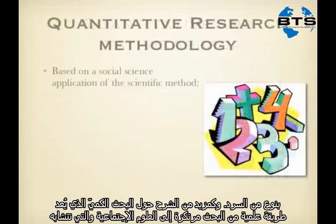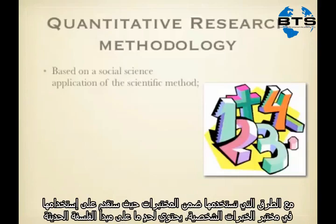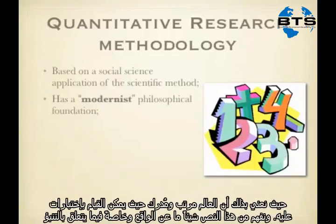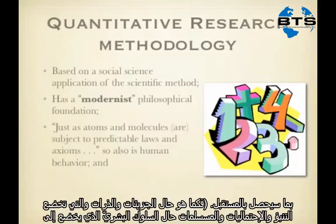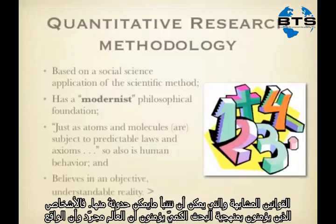Quantitative research methodology applies the scientific method to the social sciences — the same methods used in a lab are used in the lab of personal experience. It has a modernistic philosophical foundation, meaning the world is orderly and understandable and we can perform tests on it. From those tests, we can understand reality — especially in terms of predicting what can happen in the future. Just as atoms and molecules are subject to predictable laws, so is human behavior. People who believe in quantitative research methodology believe the world is objective and reality is understandable.